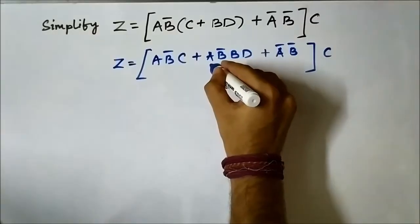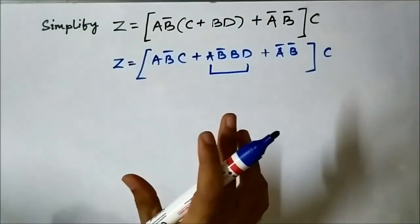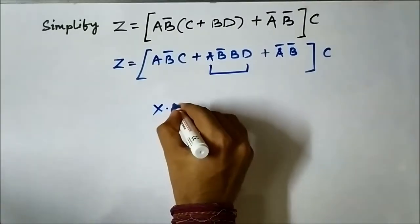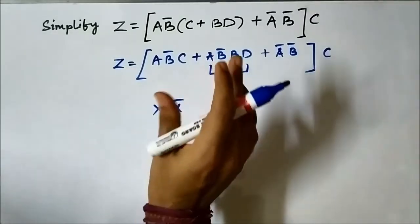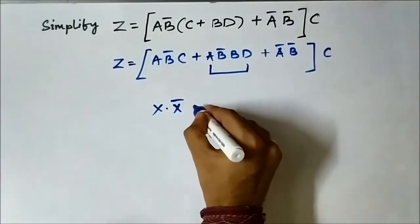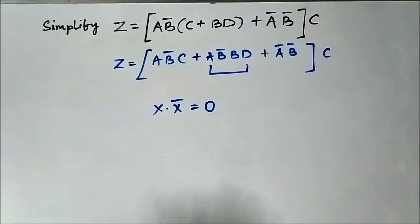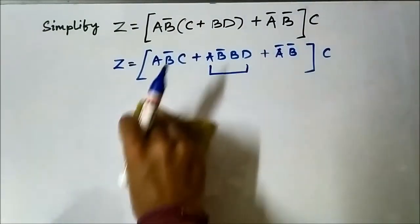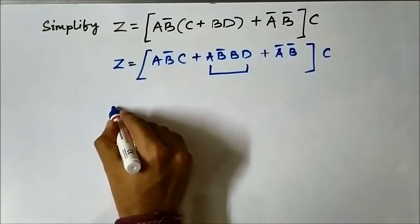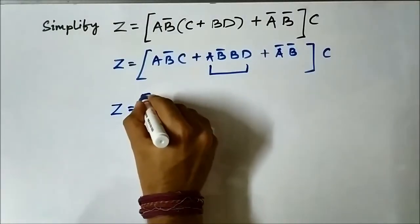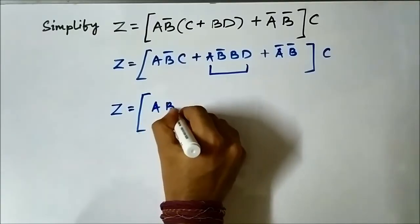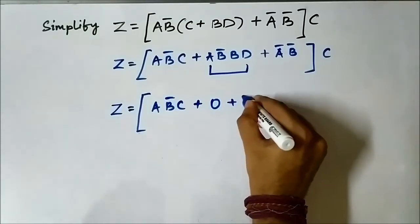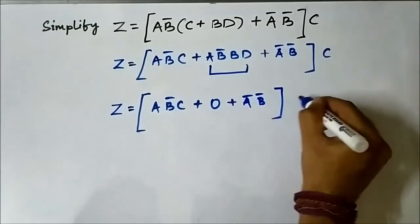Focus here — we have an AND rule which says if a Boolean variable is AND-ed with its complemented variable it results in 0. We will apply this rule here to one of the terms, so that term becomes 0. We can write z equals ab̄c plus 0 plus āb̄c.